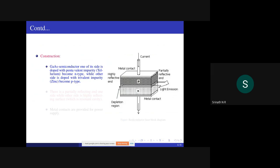One of its ends is partially reflective and the other side has a highly reflective end. This helps to enhance photon density in the active media through multiple reflections. There are also ohmic contacts for electrical supplies.